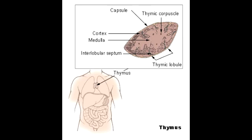What is the thymus derived from? Thymus is derived from the third branchial pouches. The thymus consists of a cortex and medulla. The cortex is dense with immature T-cells, whereas the medulla is pale and contains mature T-cells and epithelial reticular cells containing Hassall's corpuscles.